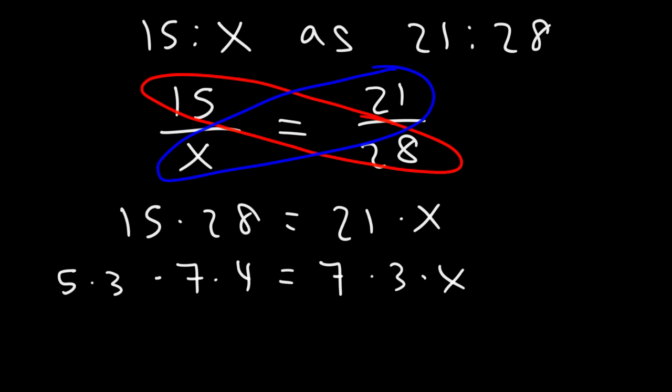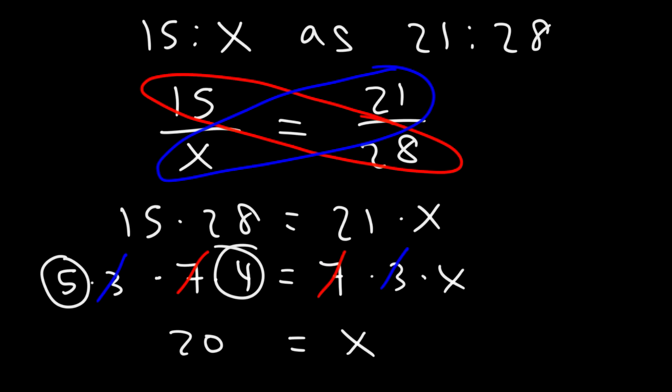Now, if you divide both sides by 7, you could cancel the 7 on both sides. And we could do the same with the 3. So notice that we only have the x variable on the right side. So the answer is going to be 5 times 4, which is 20. So x is 20.